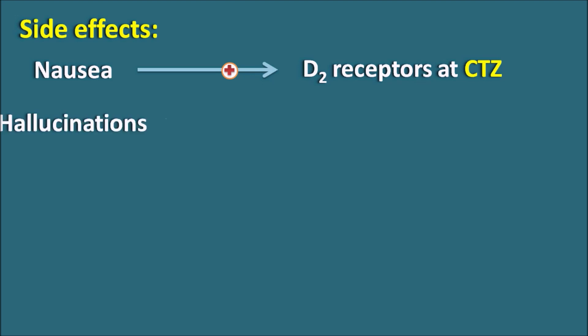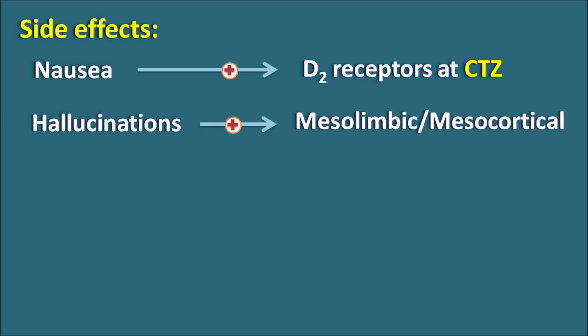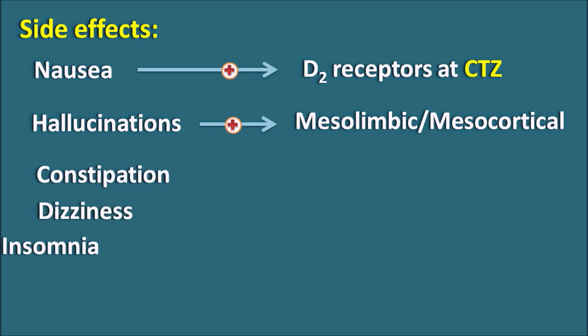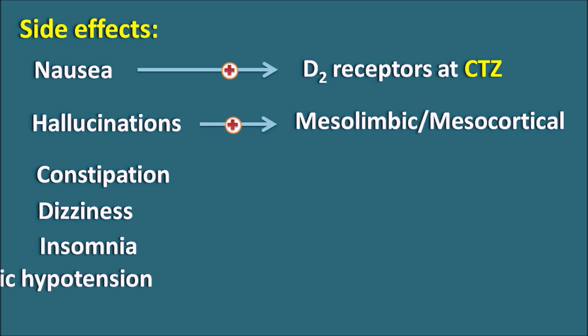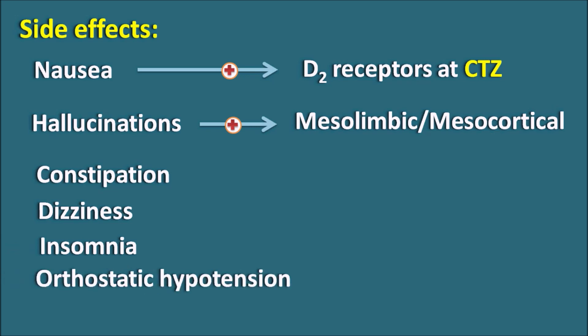The second important side effect is hallucinations. As already discussed, these drugs not only act on the nigrostriatal pathway but also stimulate the mesolimbic and mesocortical pathway, which is responsible for psychotic symptoms like hallucinations and delusions. Additionally, these drugs can produce other side effects like constipation, dizziness, insomnia, lack of sleep, and orthostatic hypotension.